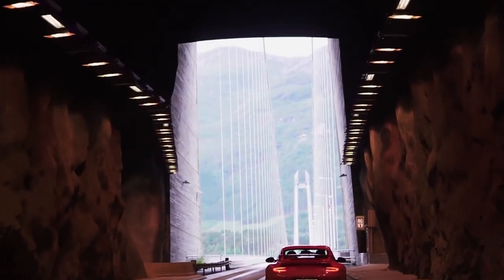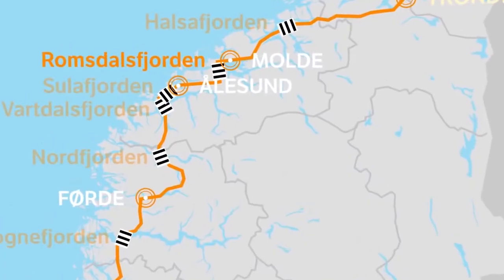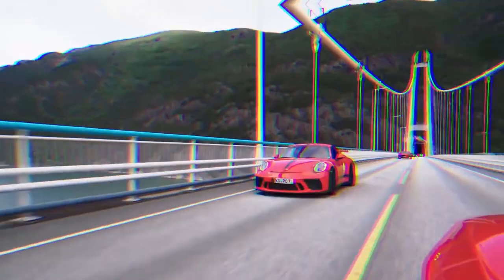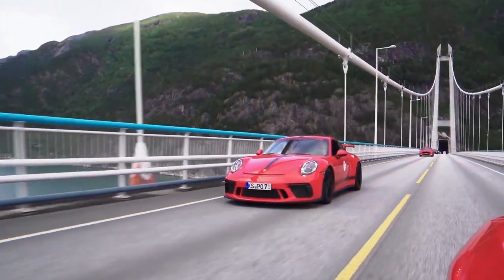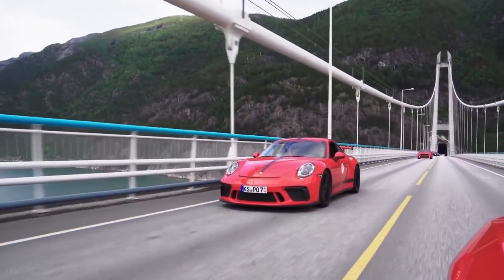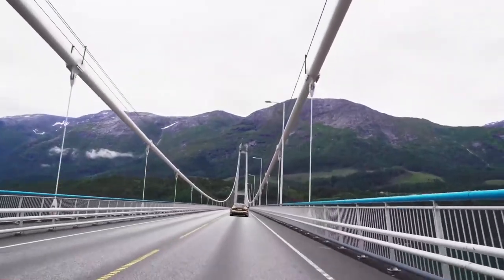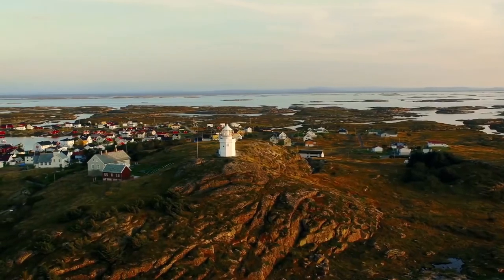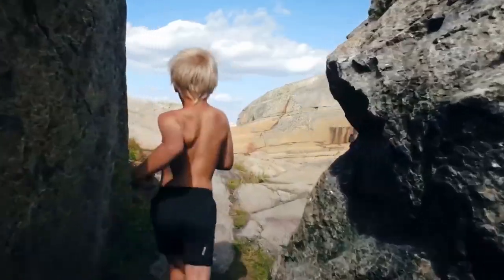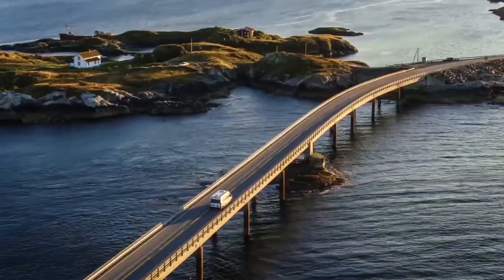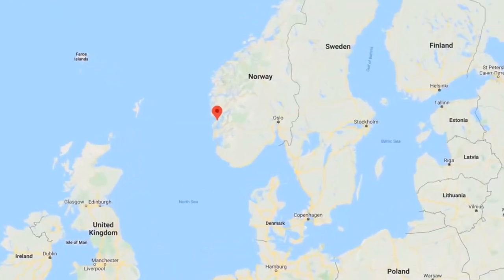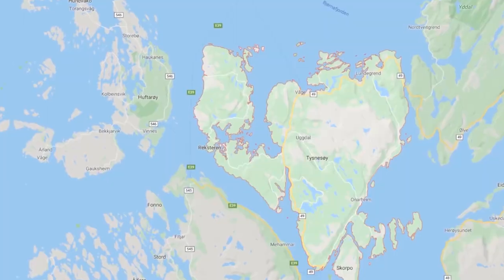Bridges are structures that are built to overcome a geographical or unnatural obstacle and to ensure that traffic continues from one side of this obstacle to the other. Different definitions can be made for the arch-type bridge or suspension bridge. Bridges are structures that serve for many years — for example, Mostar Bridge has been standing for centuries.